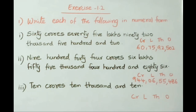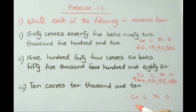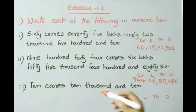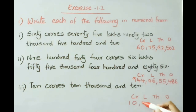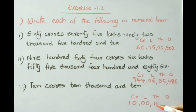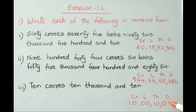See the third one: 10 crores, 10,000, and 10. Under crores write 10. Since there are no lakhs, place zeros in the lakhs place. Under thousands write 10. Since hundreds are not given, place 0 and write 10 in the ones. So the number is 10 crores, 10,000 and 10.